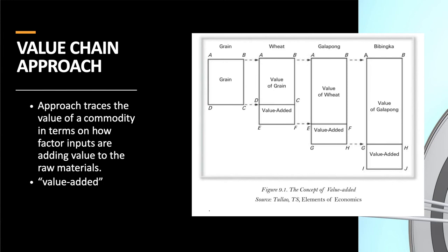We now move on to the value chain. The value chain is called so because every time an input or product goes through processing, its value increases. This approach raises the value of a commodity based on how factor inputs add value to raw materials. For example, raw cotton is much cheaper than a finished printed t-shirt, because the cotton has gone through multiple stages and its value has grown at each step.